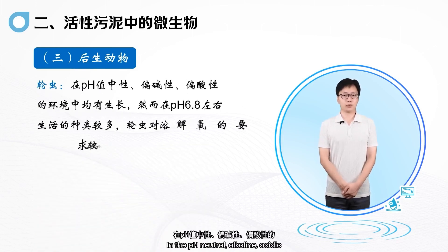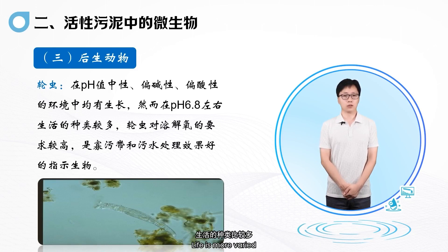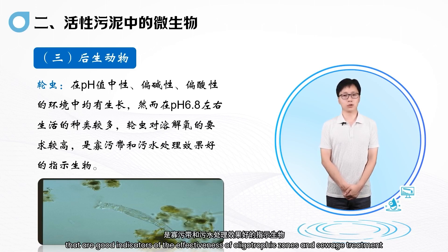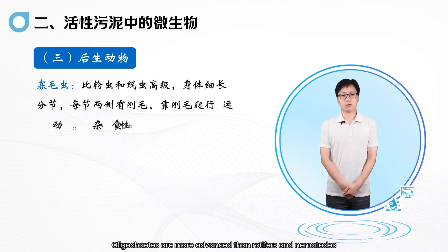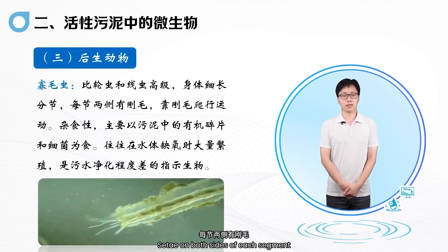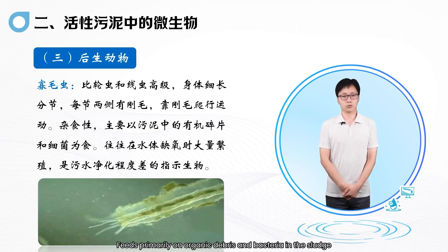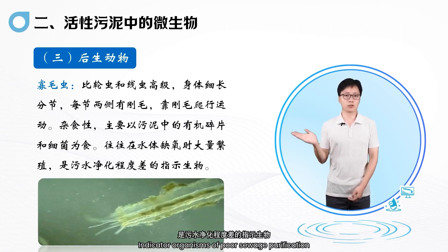Rotifers grow in all environments — pH neutral, alkaline, or acidic — however, life is most varied in environments with a pH of around 6.8. Rotifers have a high requirement for dissolved oxygen and are good indicators of the effectiveness of oligotrophic zones and sewage treatment. Oligochaetes are more advanced than rotifers and nematodes: body elongated, segmented, with setae on both sides of each segment, crawling by bristles. They are omnivorous, feeding primarily on organic debris and bacteria in the sludge, and tend to proliferate when the water body is deprived of oxygen — making them indicator organisms of poor sewage purification.